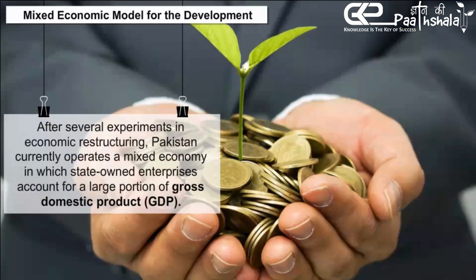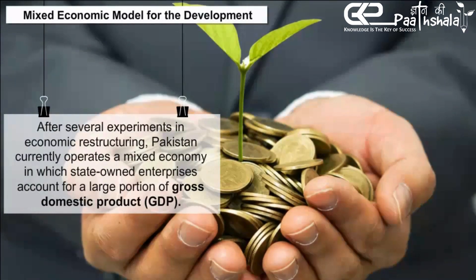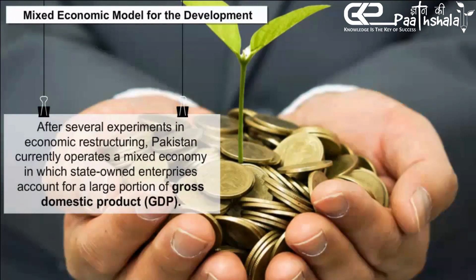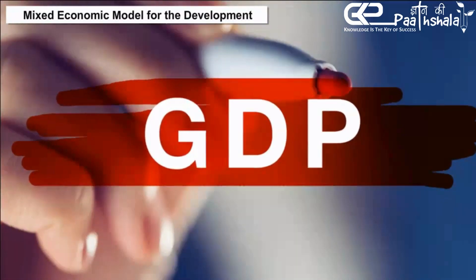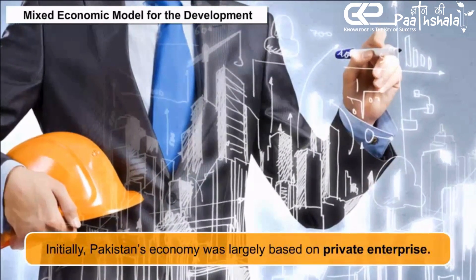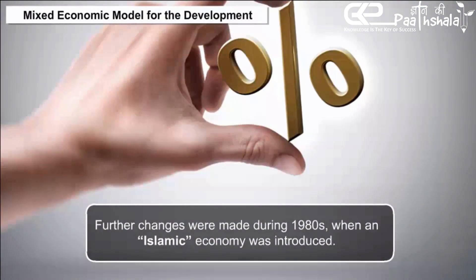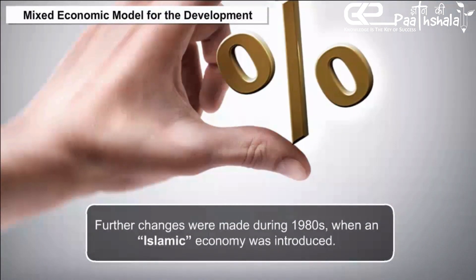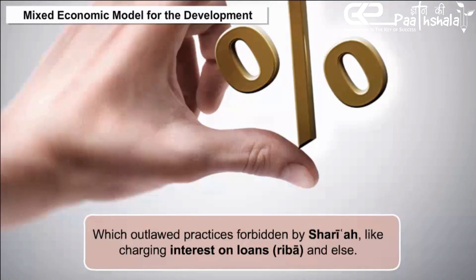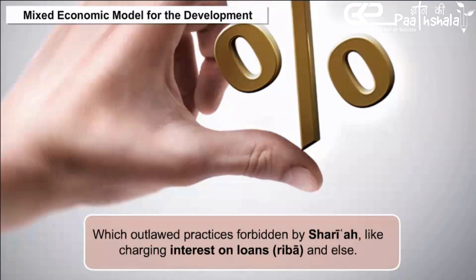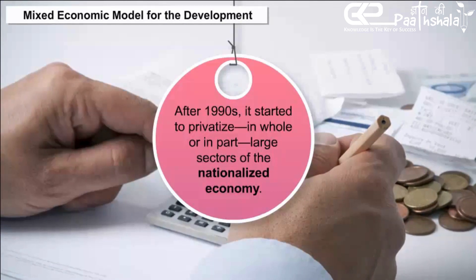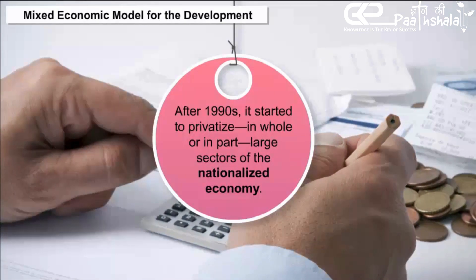After several experiments in economic restructuring, Pakistan currently operates a mixed economy in which state-owned enterprises account for a large portion of GDP. Initially, Pakistan's economy was largely based on private enterprise. Changes were made during the 1980s when an Islamic economy was introduced, which outlawed practices forbidden by Sharia, like charging interest on loans (Riba). But after the 1990s, it started to privatize, in whole or in part, large sectors of the nationalized economy.